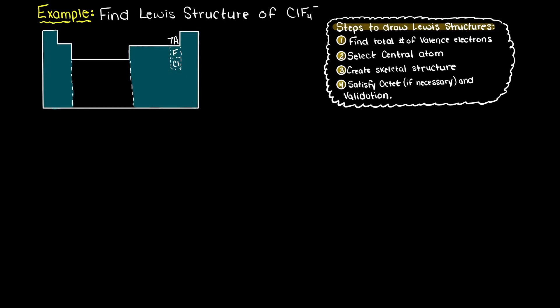Hi everybody, in this example video we are going to be solving for the Lewis structure of ClF4 negative, which is tetrafluorochlorate anion. To easily remember the steps for finding a Lewis structure, I have them in the top right hand corner of our screens now, so let's get right into the problem.